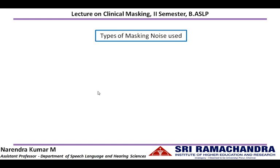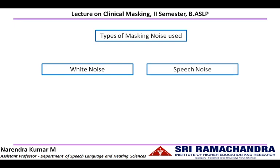With respect to types of masking noise used, as speech signal is a broadband signal we need a broadband noise. So both white noise as well as speech noise can be used as masking noise. The disadvantage of using white noise is that it has comparatively less energy at low frequencies. Hence a speech noise or speech-shaped noise will be the best option to be used as masking noise.